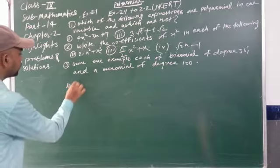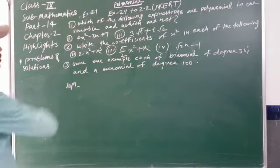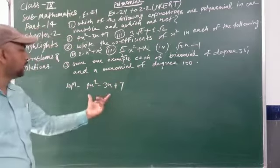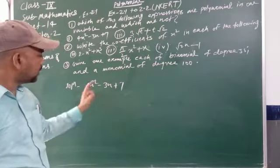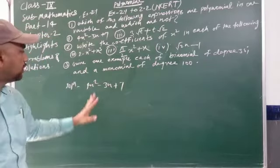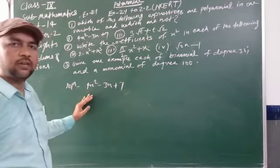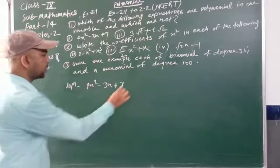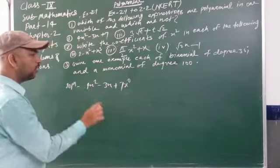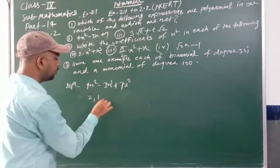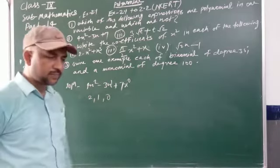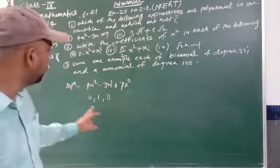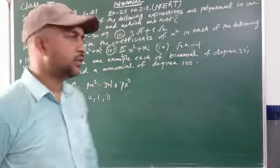Solution for the first part of exercise 2.1 is 4x² minus 3x plus 7. For it to be a polynomial, all exponential values of the variables must be non-negative integers. The exponential values in this expression are 2, 1, and 0. We can clearly see that 2, 1, and 0 are all non-negative integers, so this is a polynomial.